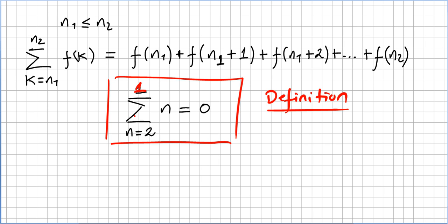So from k equals n1 to n2, f of k, so f of n1, f of n1 plus 1, f of n1 plus 2, f of n1 plus 3, etc., f of n2, and that will be the last element of the summation.